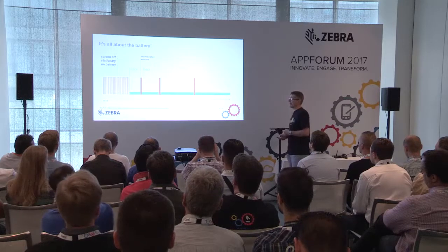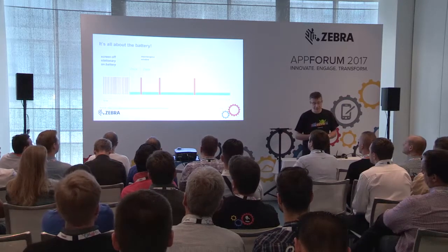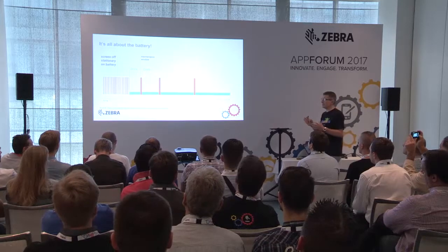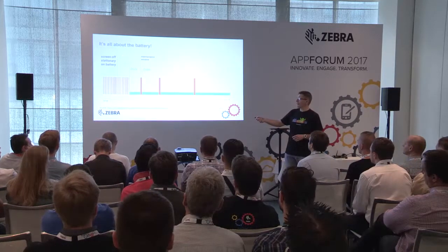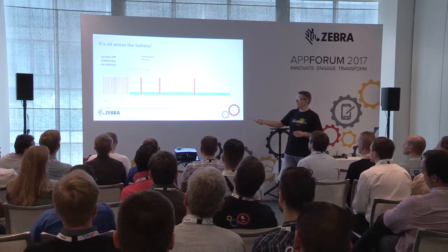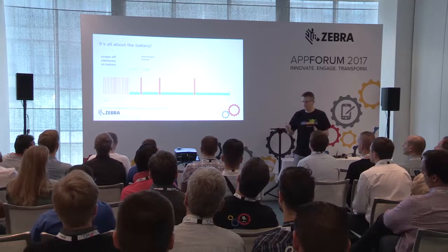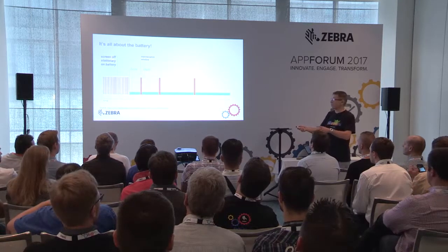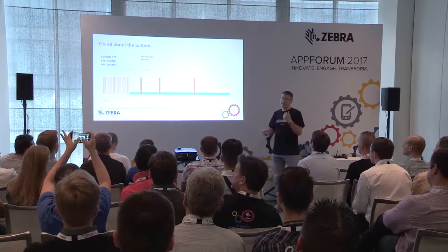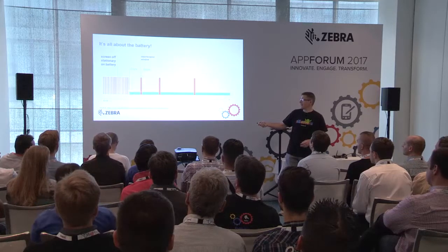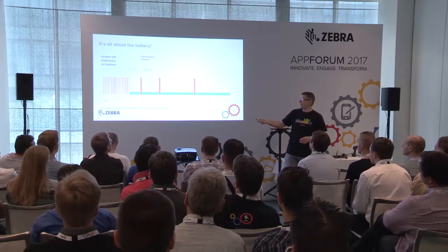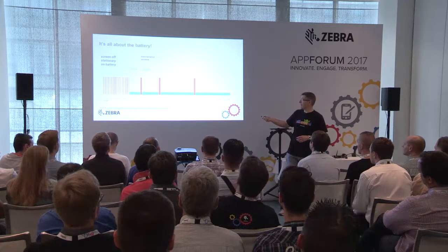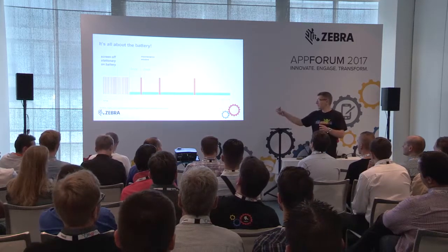Doze mode is another big change for Marshmallow at API level 23. It's a new power mode that tries to save battery as much as possible. Doze mode kicks in after a vendor-defined timeout when the screen is off, the device is stationary and not moving, and it's on battery. Once active, no activities or network transfers occur. You get maintenance windows that start every 10 minutes, then 20 minutes, then half an hour, and so on.